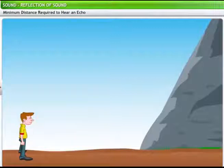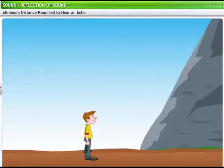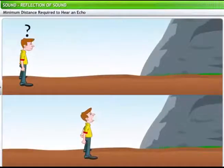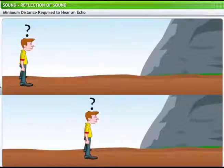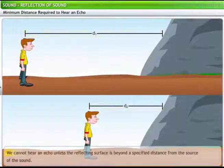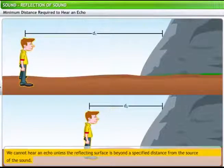Why do you think you could hear an echo in the first position, but not in the second? Try and analyze what changed in the second situation. Nothing but the distance of the man from the cliff, right? It is the distance that is making a difference. We cannot hear an echo unless the reflecting surface is beyond a specified distance from the source of the sound. In this case, it was the man shouting hello.